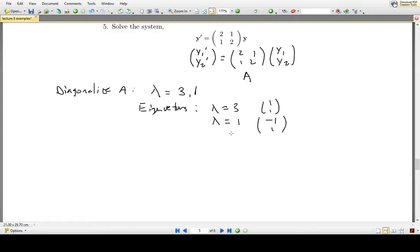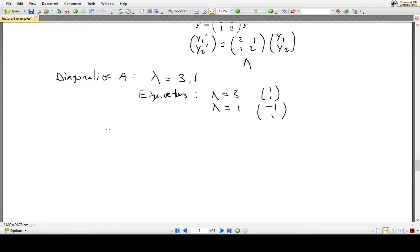So this allows us to rewrite A, and we can also get our P matrix for a diagonalization. Our P matrix is going to be [[-1,1],[1,1]].